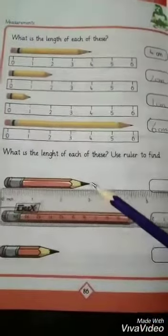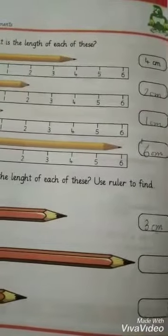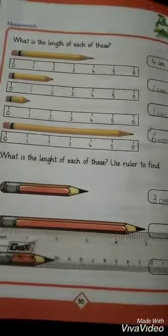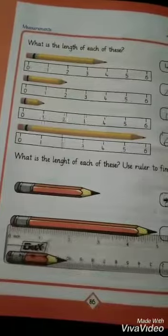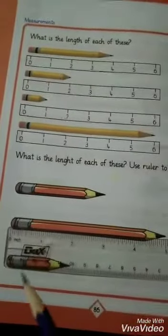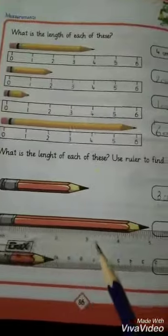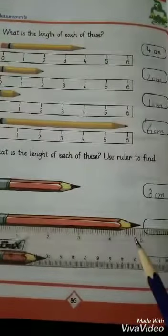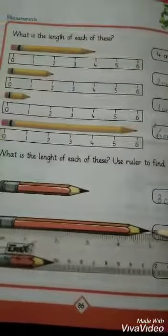Look at the next pencil. We placed the scale and measured: zero, one, two, three, four, and five. Look, students, at its tip it's exactly five. So this pencil is five centimeters long.